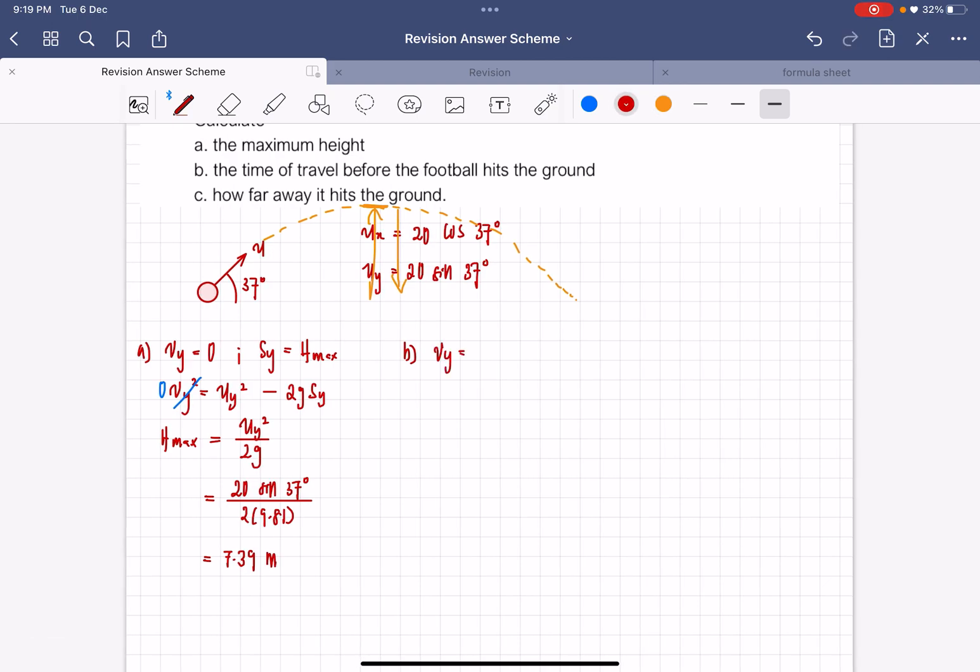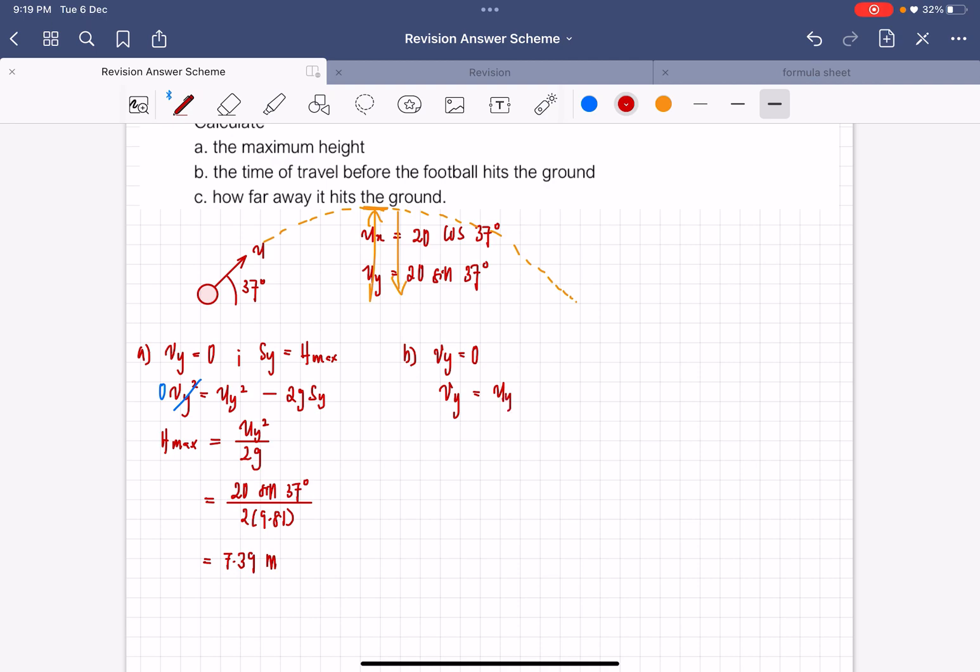So how do we find that? Again, we apply Vy equals 0. Now we want to find time, so Vy equals Uy minus g times t maximum. Vy equals 0, then we are looking for the time which is going to be Uy over g. That is 20 sin 37 degrees over 9.81, which will give you 1.23 seconds.